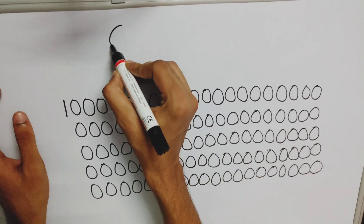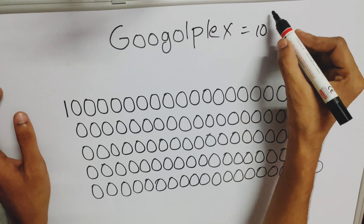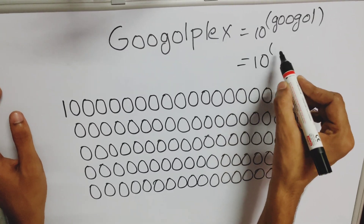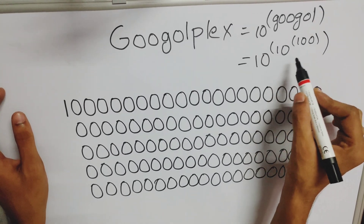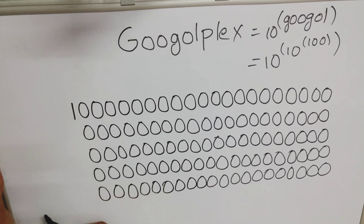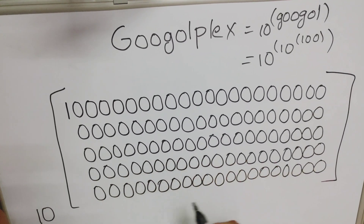Now, what about Googleplex? A Googleplex is equal to 10 raised to the power of Google, which is equal to 10 raised to the power of 10 raised to the power of 100. Notice that the exponent is in scientific notation. If we represent the exponent in standard form, we get the Googleplex value as 10 raised to the power of Google — that's 10 raised to the power of 1 followed by all those 100 zeros.